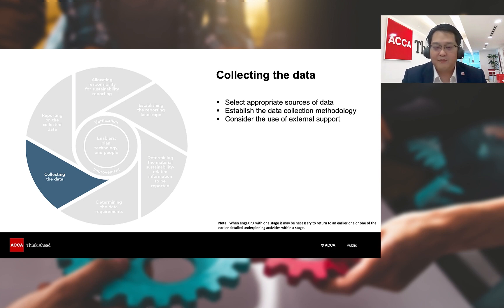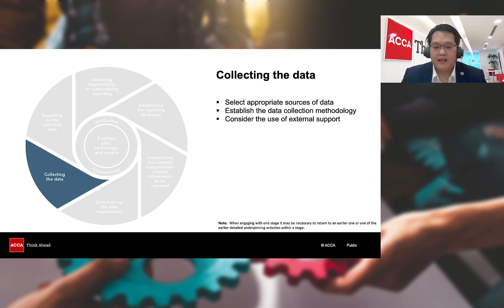Technology and data professionals may add value here. Stage 5.2 of the cycle encourages organizations to pay close attention to how the required data will be collected, as the methodology will greatly influence success in collecting good quality data. Technology and data professionals can assist organizations especially in: evaluating the technology available, keeping the process simple and using consistent methodology, maximizing the use of data collected, aligning frequency of collection with reporting timelines, and aligning data collection with the procurement process, and finally embedding verification in the process and systems.